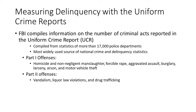The Uniform Crime Report is the most widely used source of national crime and delinquency statistics. The FBI — the Federal Bureau of Investigation — collects crime data from local law enforcement, prisons, and courts, essentially the criminal justice system. The FBI compiles the information and publishes it annually: the number of reported offenses by city, county, and geographical areas of the U.S.